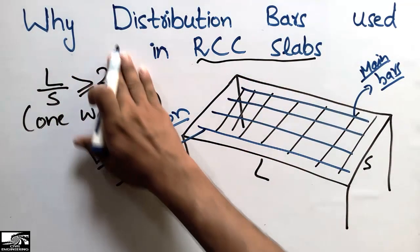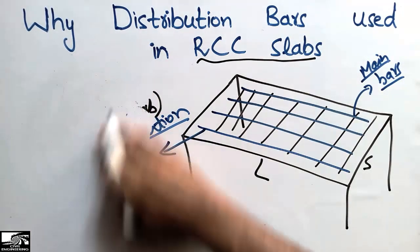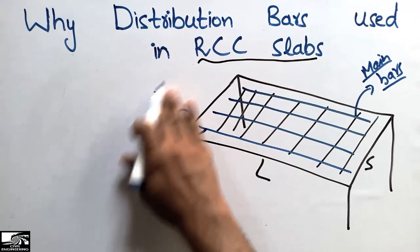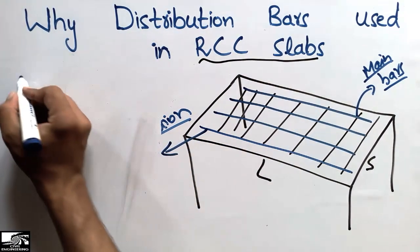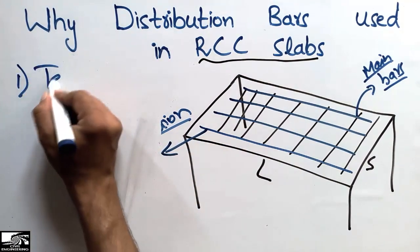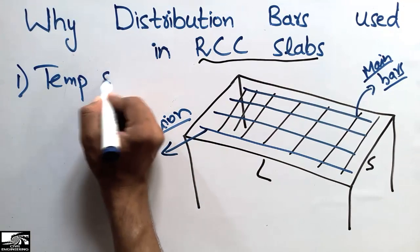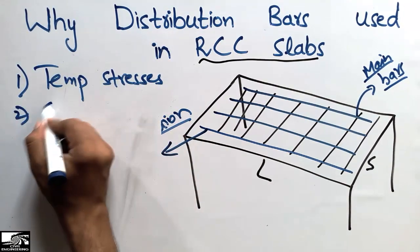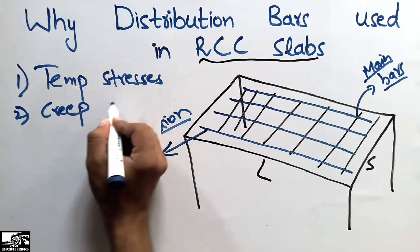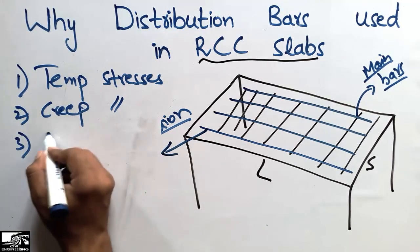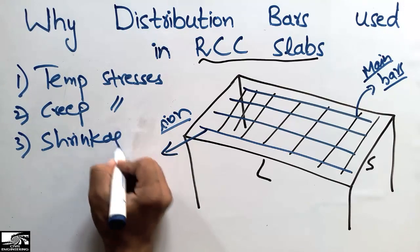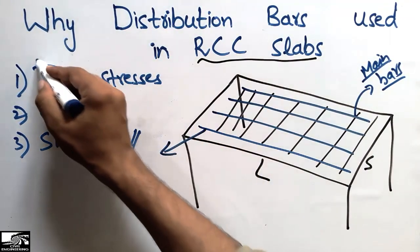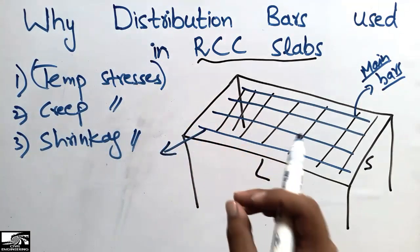There are basically three types of stresses that are resisted by the distribution bars. The first one is temperature stresses, the second one is creep stresses, and the third one is shrinkage stresses.